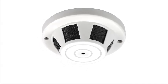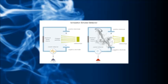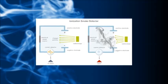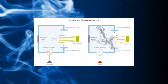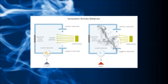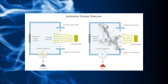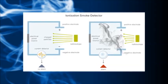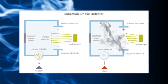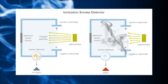When smoke enters the chamber, the particles attach themselves to the charged ions and restore them back to a neutral electrical state. This disrupts the electric current and an alarm is triggered. Hot air can also change the rate at which ionization occurs within the chamber, and this will also trigger the alarm.